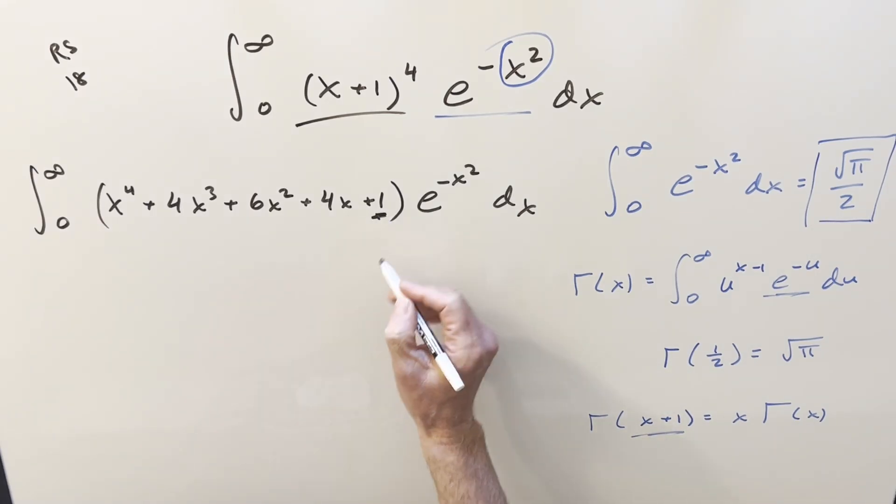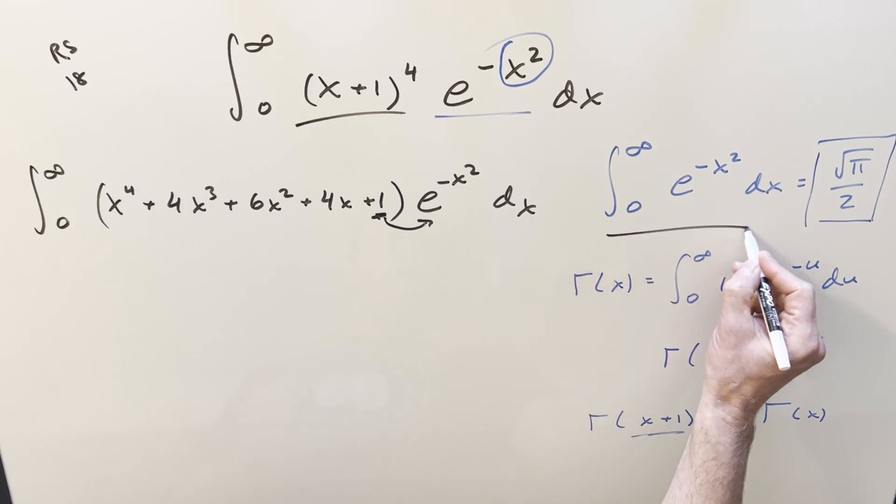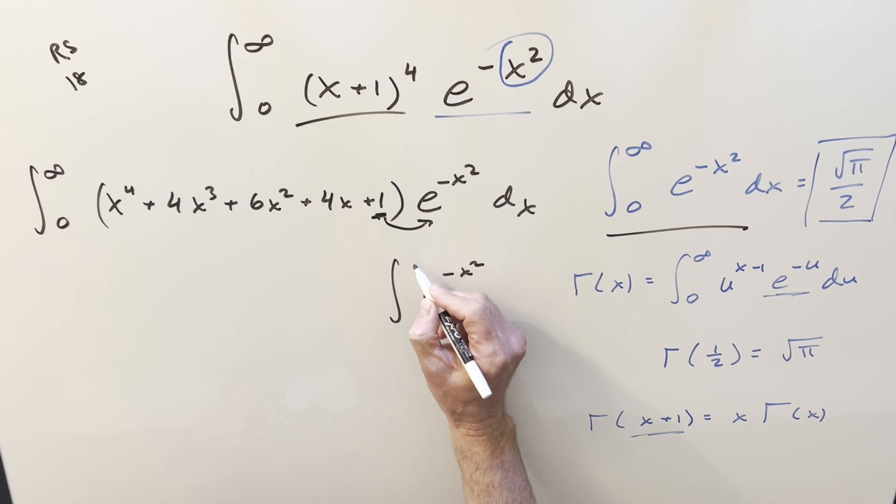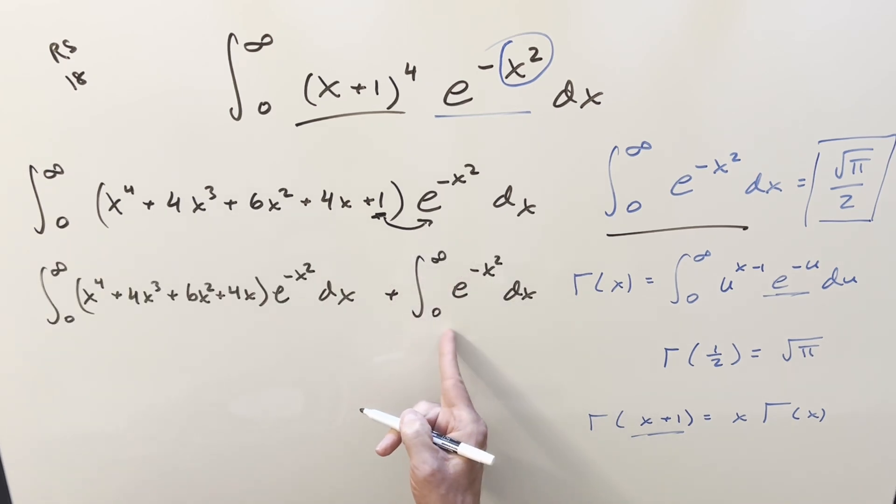One thing we can notice, we have just a plus 1 here. If I distribute that in on the e^(-x^2), then we're going to create this integral here. So I'll break that, just that one off, as a separate integral. And so doing it like this, now for this second integral, we just have our value. It's going to be square root of pi over 2.